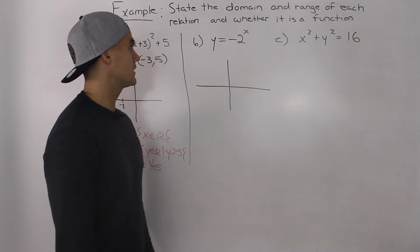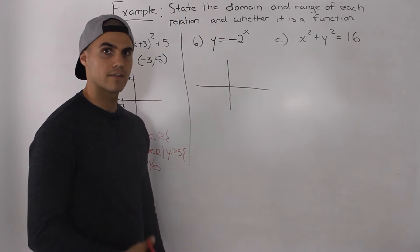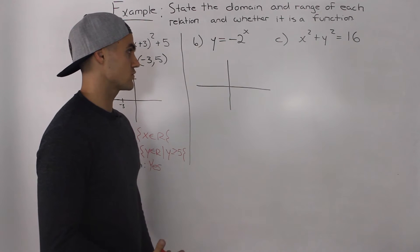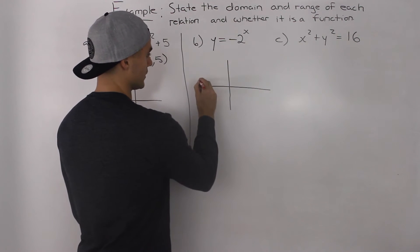Moving on to part b, we have y is equal to negative two to the power of x. And this represents an exponential function. So you may have to go back to grade 11 and review exponential functions a bit. But let's do a little review here.